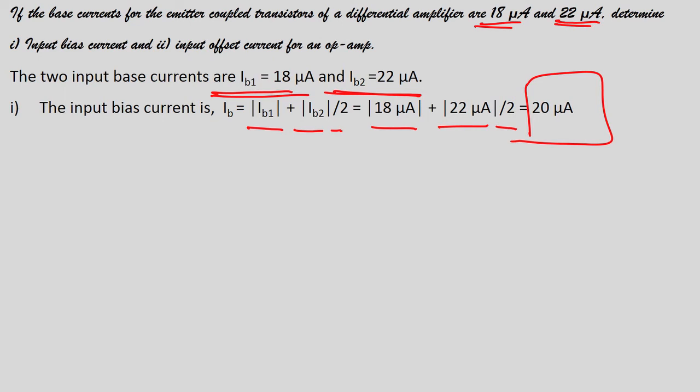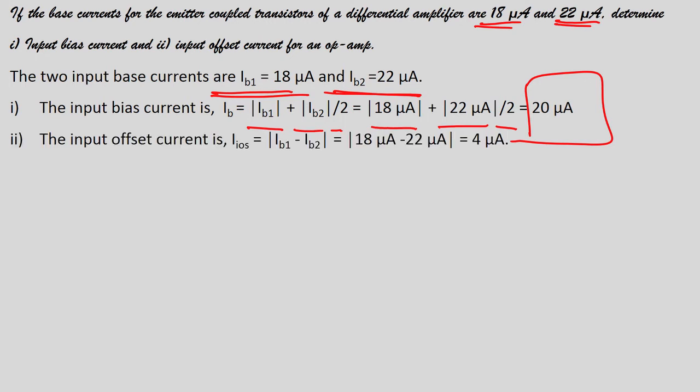For input offset current using the same values: IOS = |IB1 - IB2| = |18 - 22| = 4 µA. Note it is a magnitude, so the answer is 4 µA, not -4 µA. This is how you can calculate input offset current theoretically, even without lab equipment.